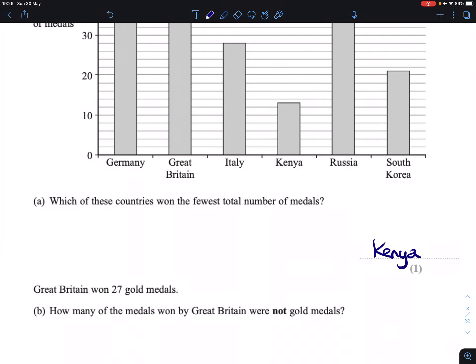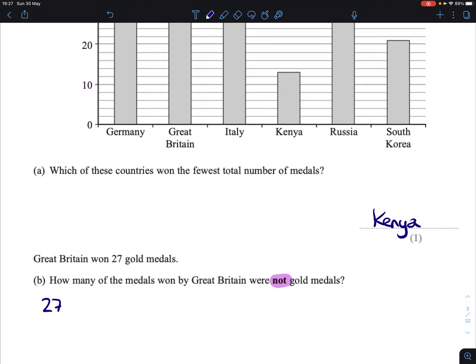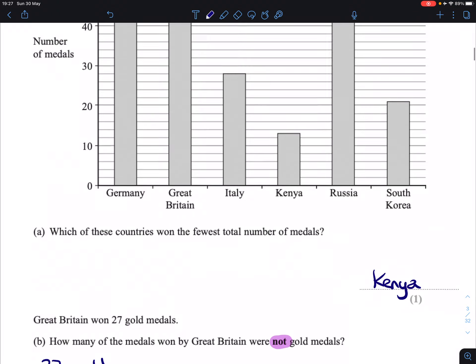Great Britain won 27 gold medals. How many of the medals won by Great Britain were not gold medals? Well, first of all, if there were 27 gold, we might want to look at the graph above to see how many there were in total.